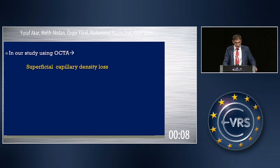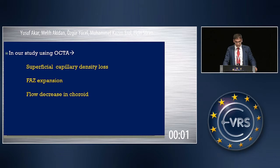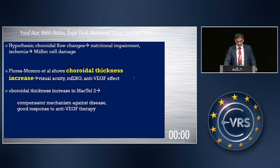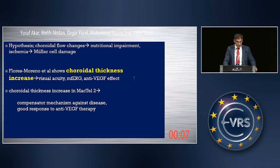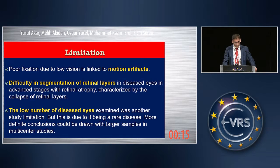In our study, we showed superficial capillary density loss, foveal avascular zone expansion, and decreased flow in the choroid in macular telangiectasia patients. In the literature, similar results have been shown, and choroidal thickness increase has been described as a compensatory mechanism against the disease, with a good response to anti-VEGF treatment.